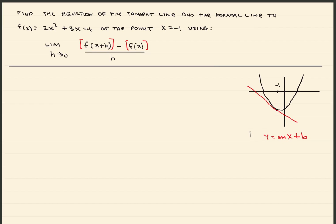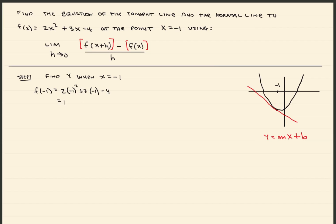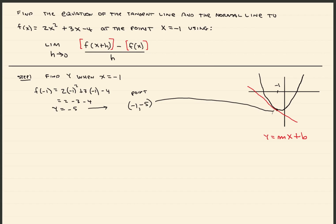First of all, let's find the point itself. We need x and y. Step 1: find y when x is equal to negative 1. This is pretty easy — just plug negative 1 into the original function. So f of negative 1 equals 2 times negative 1 squared plus 3 times negative 1 minus 4. That gives you 2 minus 3 minus 4, which equals negative 5. So this gives you the point negative 1, negative 5, and that is the point.